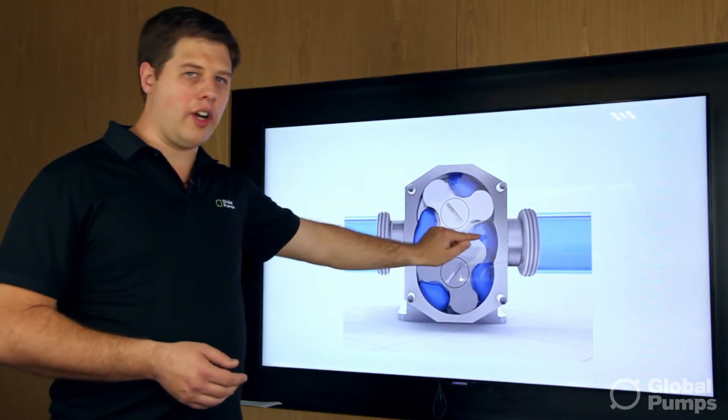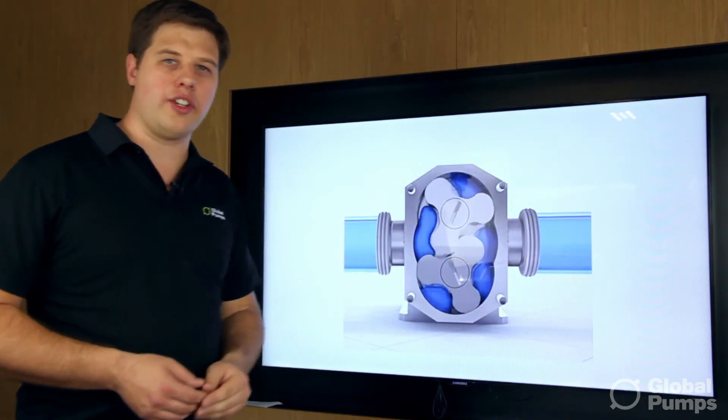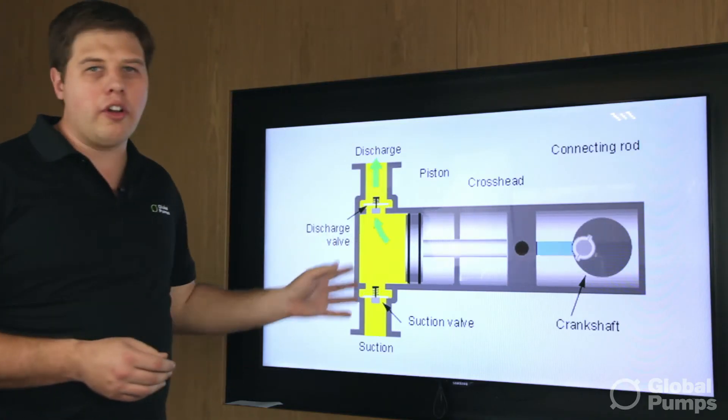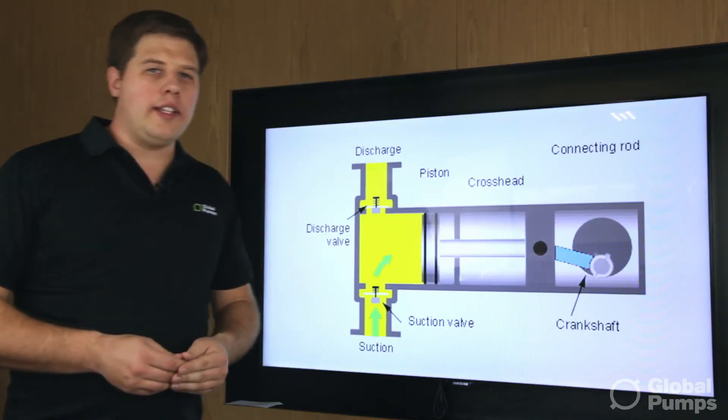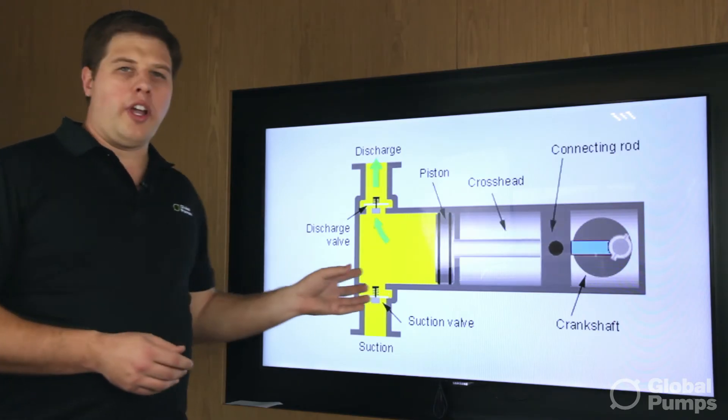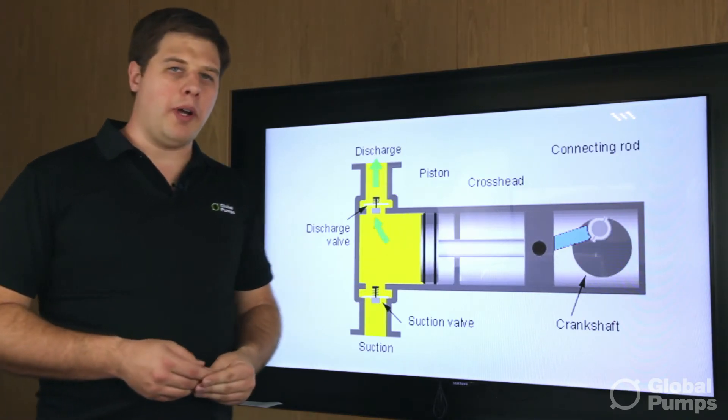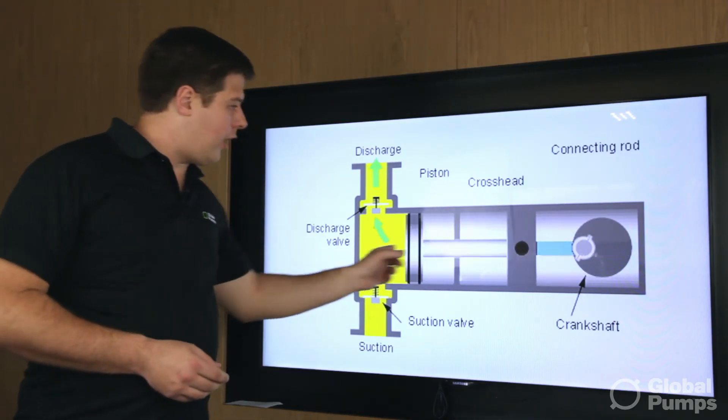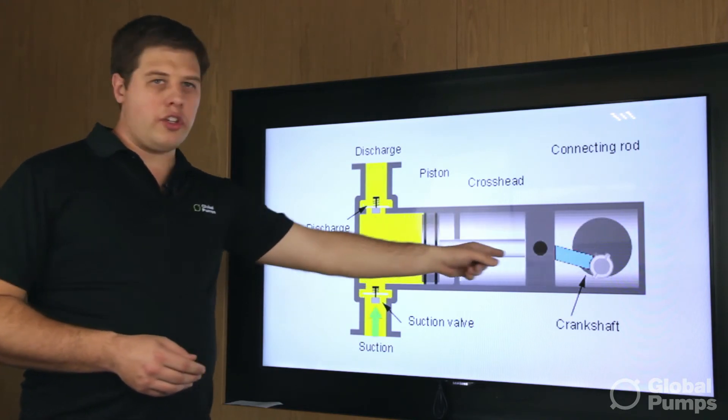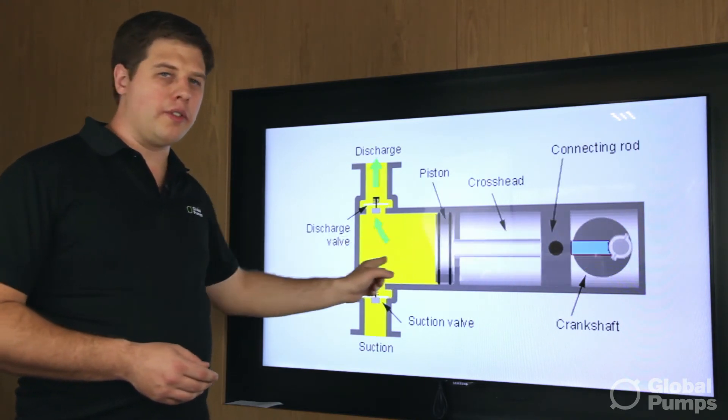What we've got here on the screen is a reciprocating positive displacement pump. As you can see it's pulling this shaft backwards and forwards.